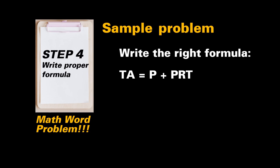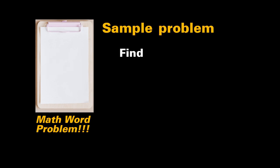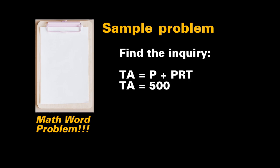The fifth and last step is substituting the given data in the formula. TA equals principal amount plus principal amount multiplied by rate multiplied by time.